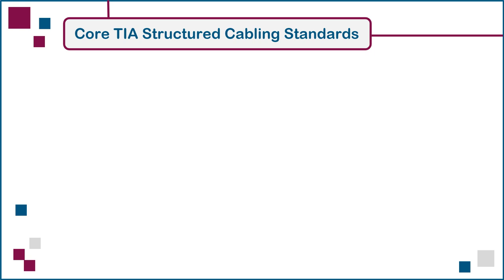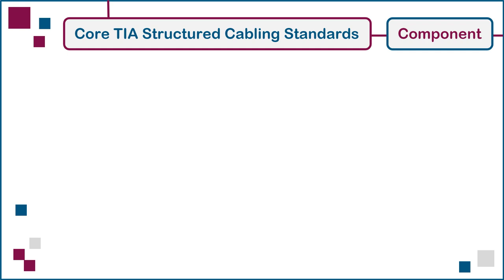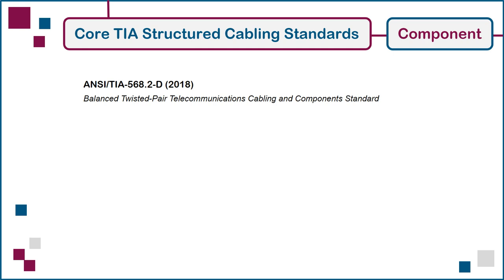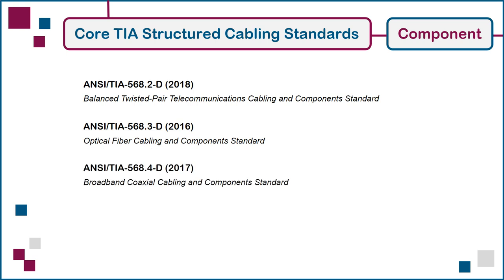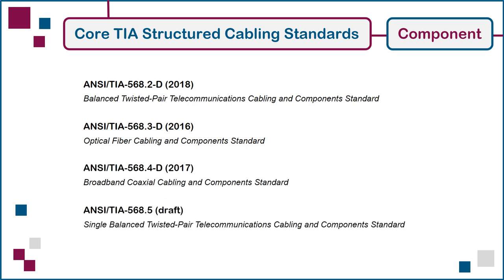The last set of Core TIA Structured Cabling Standards is the Component Set, which provides guidelines applicable to specific types of cabling media and their associated connectors. The Component Set consists of three publications and one draft publication to date, covering four-pair balanced twisted pair, single-mode and multi-mode optical fiber, broadband coaxial, and single-pair balanced twisted pair — intended as a lighter weight alternative to traditional four-pair cables for automotive and industrial applications.